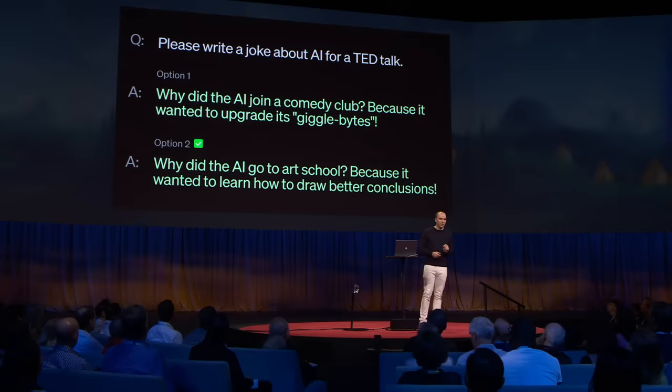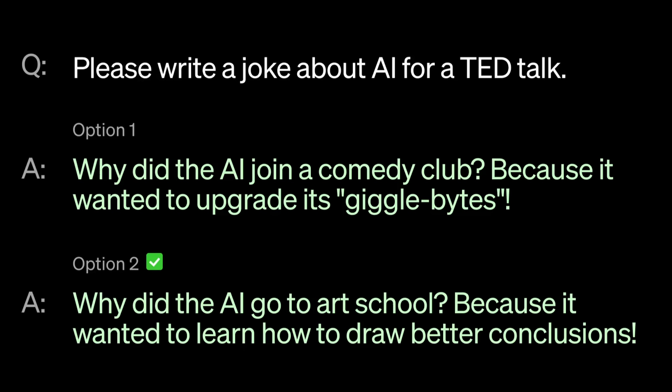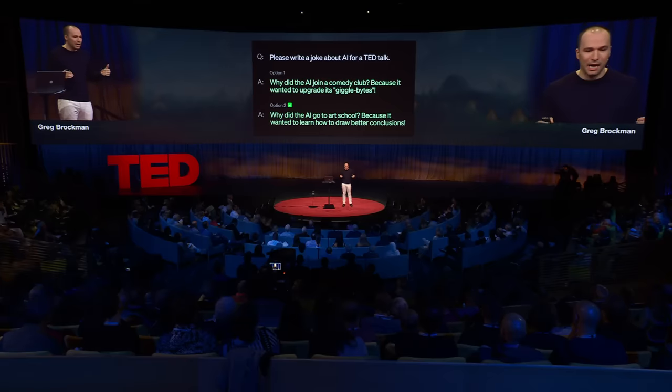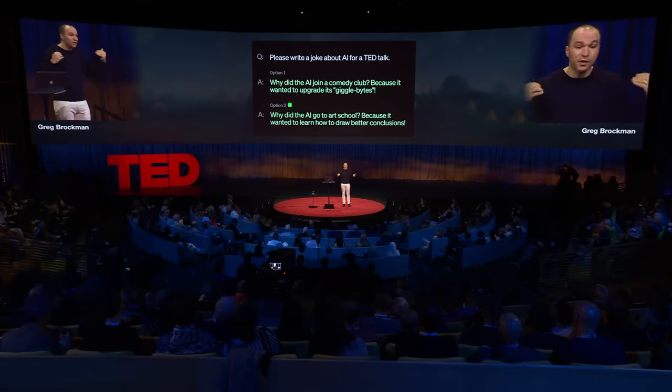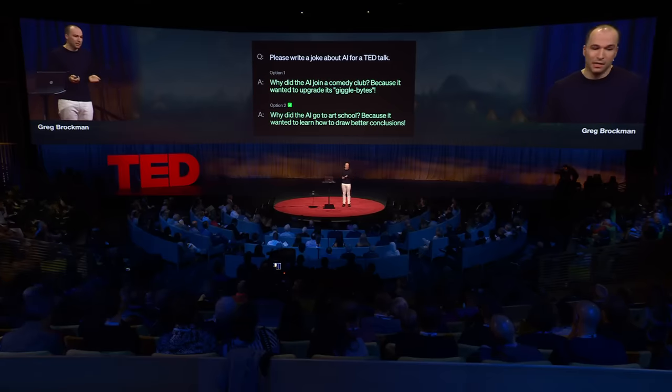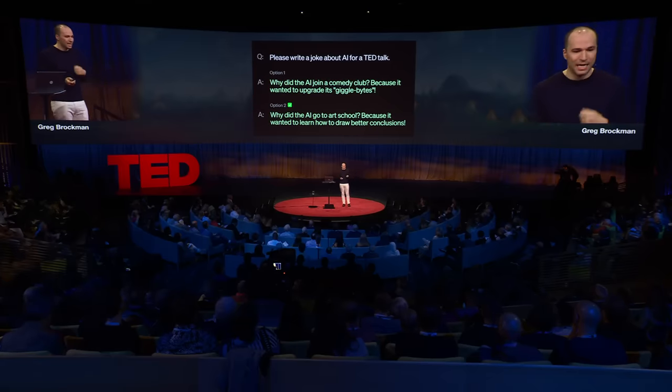We actually have to do a second step too, which is to teach the AI what to do with those skills. For this, we provide feedback. We have the AI try out multiple things, give us multiple suggestions, and then the human rates them, saying this one's better than that one. This reinforces not just the specific thing the AI said, but the whole process the AI used to produce that answer. This allows it to generalize — to infer your intent and apply it in scenarios it hasn't seen before.